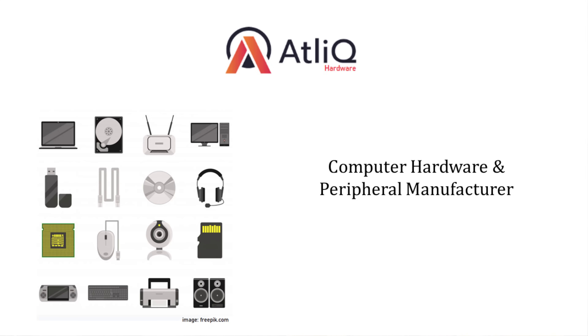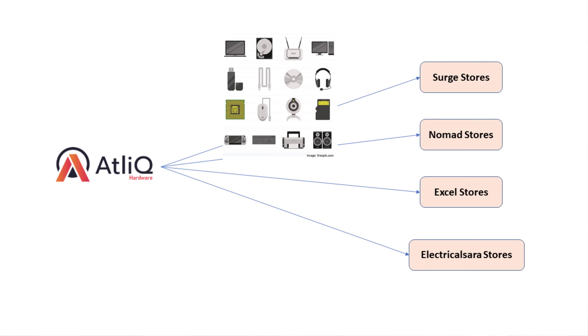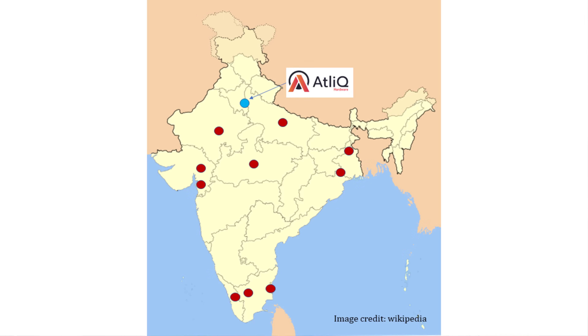Now let's talk about the problem statement. AtliQ Hardware is a company — I just made up this name — which supplies hardware peripherals to different clients such as Nomad Stores, Excel Stores, and Search Tool. It's a hardware company that supplies computers, other peripherals, and networking equipment to clients. They have a head office in Delhi, India, and regional offices in different states of India. Bhavin Patil is the sales director managing the business from the head office.